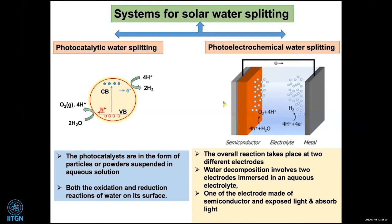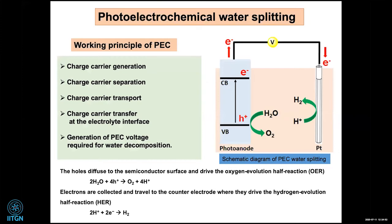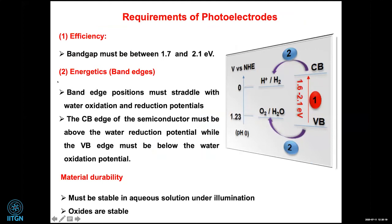If you look at the left-hand side, it's photocatalysis — a single particle doing both reactions. On the right-hand side is PEC, where you separate the two reactions: anodic reaction, cathodic reaction, electrolyte, and charge transfer. In photoelectrochemical water splitting, you need to worry about charge generation, separation, transport, and carrier transfer at the electrolyte interface. Finally, at the cathodic side, electrons coming from the external circuit drive the reduction reaction.